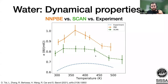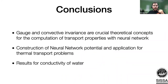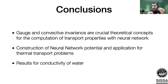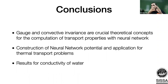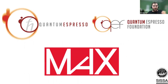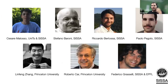In conclusion: gauge invariance and convective invariance are crucial theoretical concepts for computing transport properties with neural networks. Even though local energies are not uniquely defined—in classical simulations or with neural networks—gauge invariance tells us we can modify local energies while still obtaining the same thermal transport coefficient. I showed how to construct a neural network potential and apply it to thermal transport, presenting results for liquid water conductivity with both PBE and SCAN functionals. Thanks to the funding agencies and collaborators at SISSA, EPFL, and Princeton.